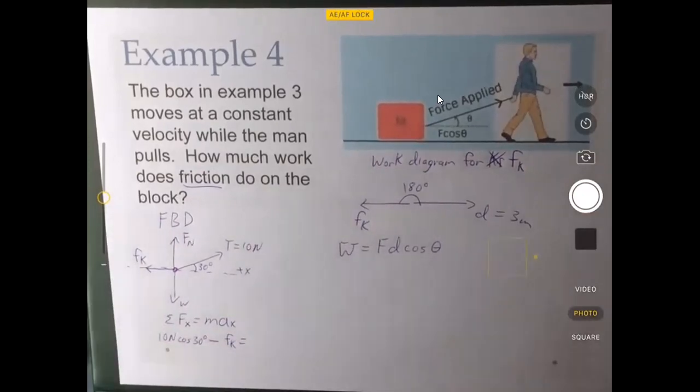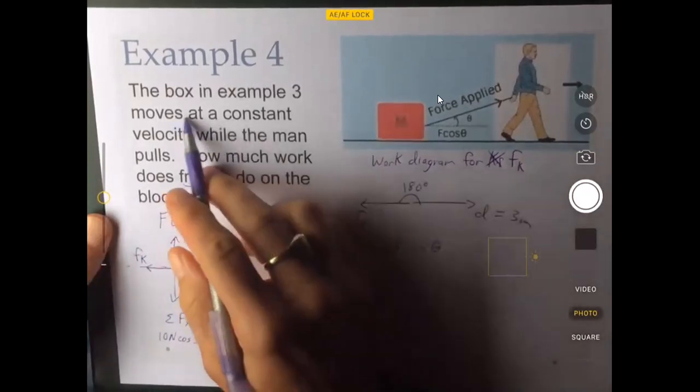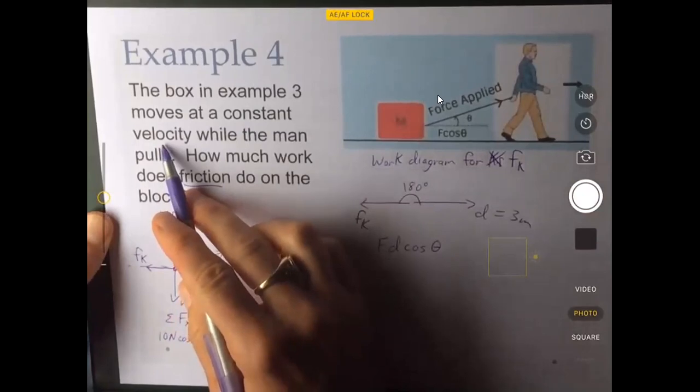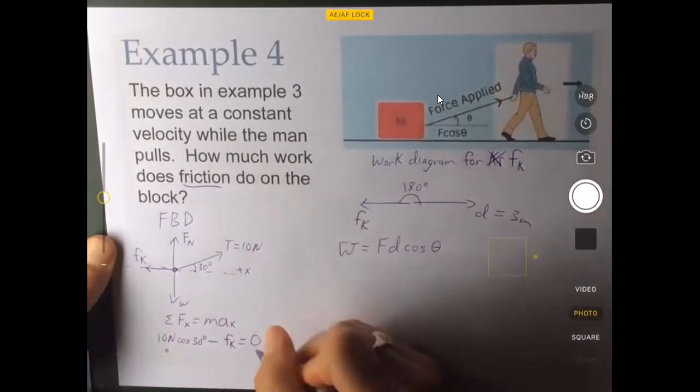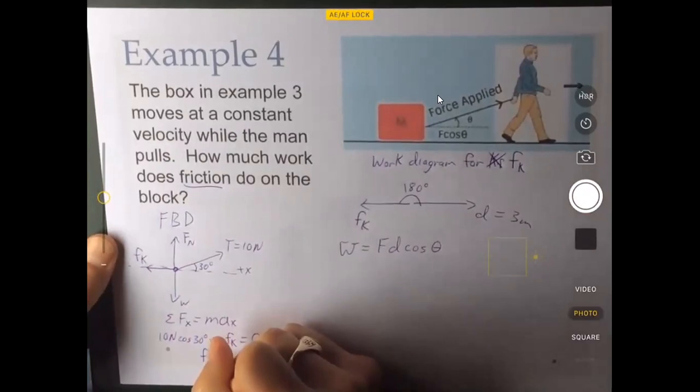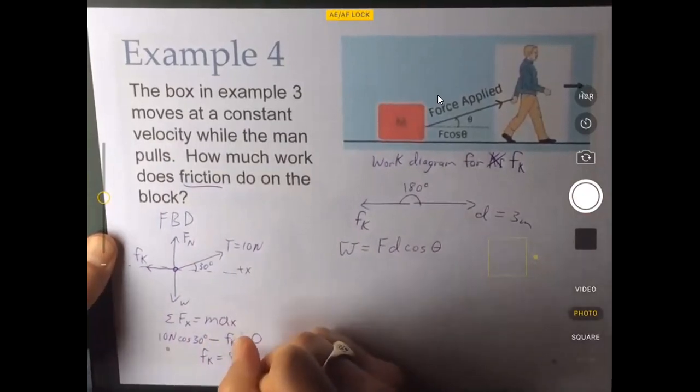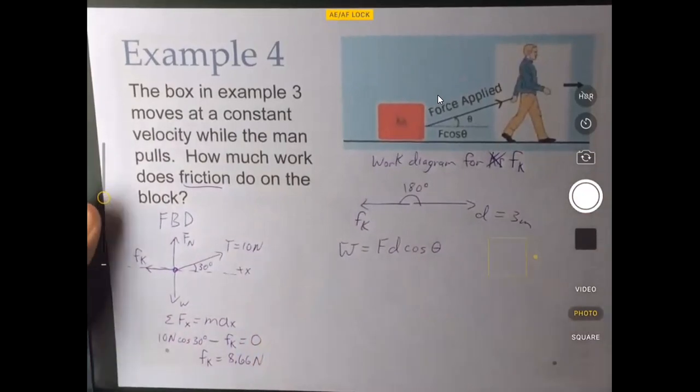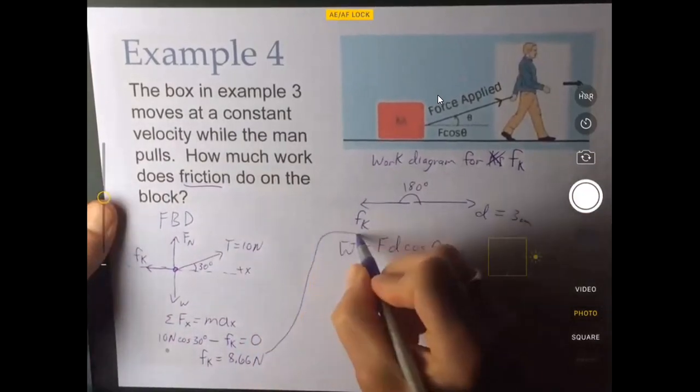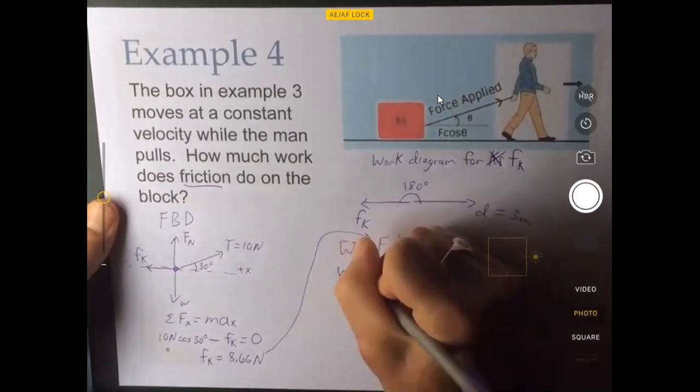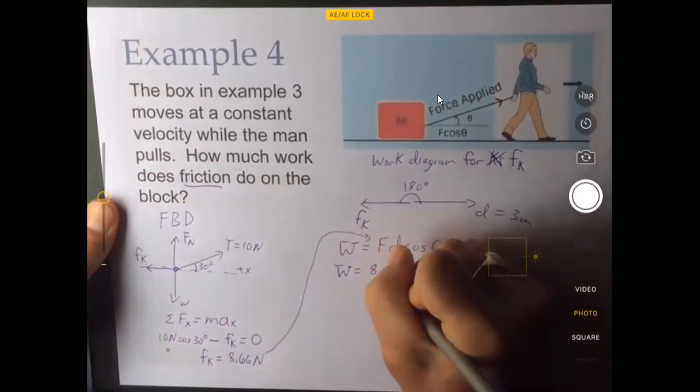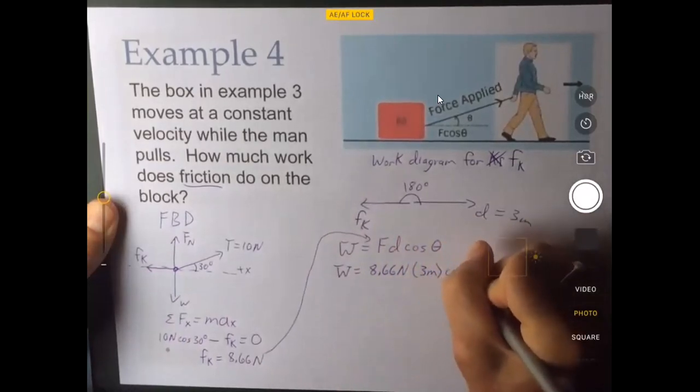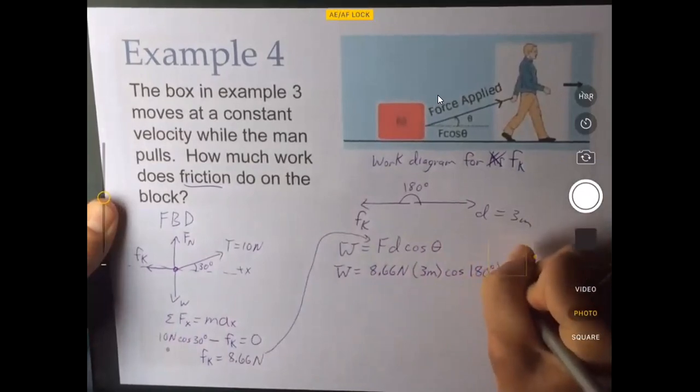Now what's the acceleration in this case? Take a look. It says it's moving at a constant velocity. It doesn't tell us how fast it's moving, but if it's a constant velocity, we know the acceleration is zero. So Fk is equal to 8.66 newtons. Now we can take that value and put it in there.